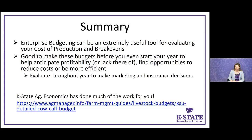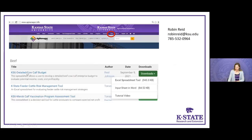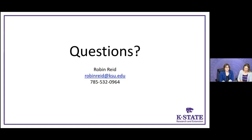The good news is, if you've never done this before, there's a spreadsheet available that will do this for you. On the Ag Manager website under the tools section, it's called the KSU Detailed Cow-Calf Budget — an Excel spreadsheet that does the calculations for you. There's a worksheet to gather information ahead of time, and a tutorial video to walk you through how to use the spreadsheet if you're not comfortable with Excel.